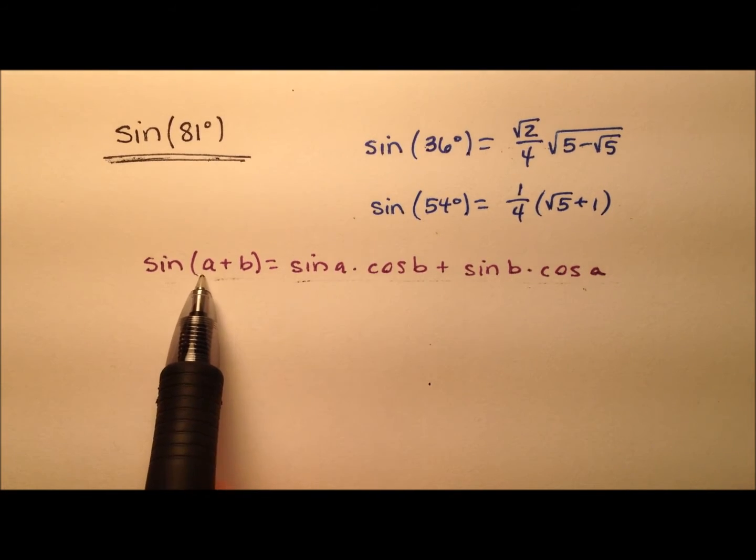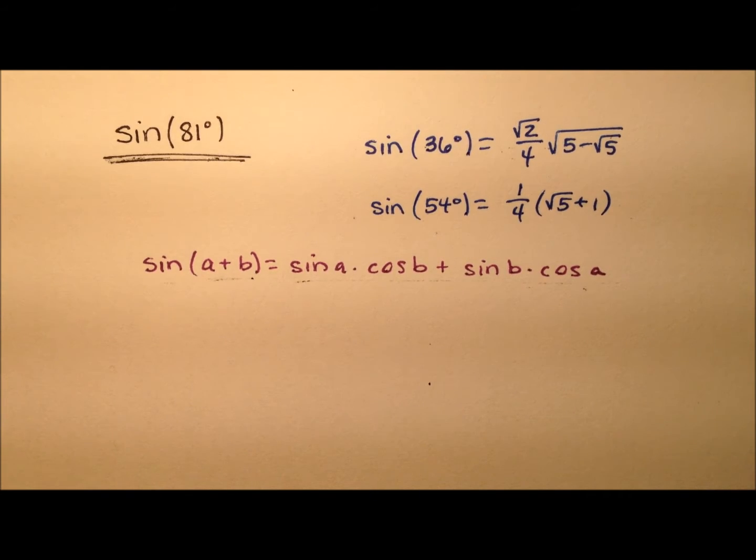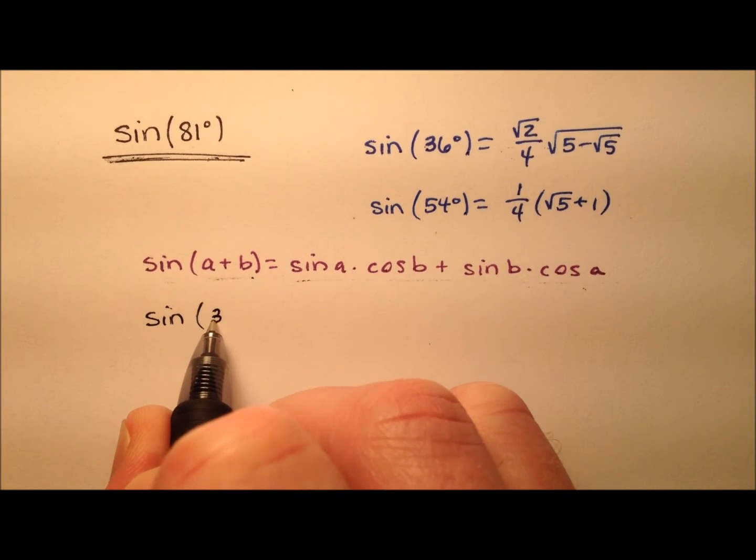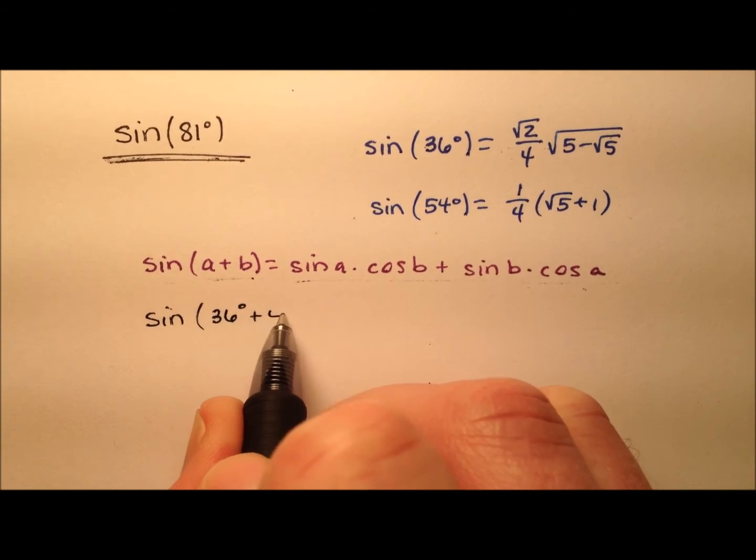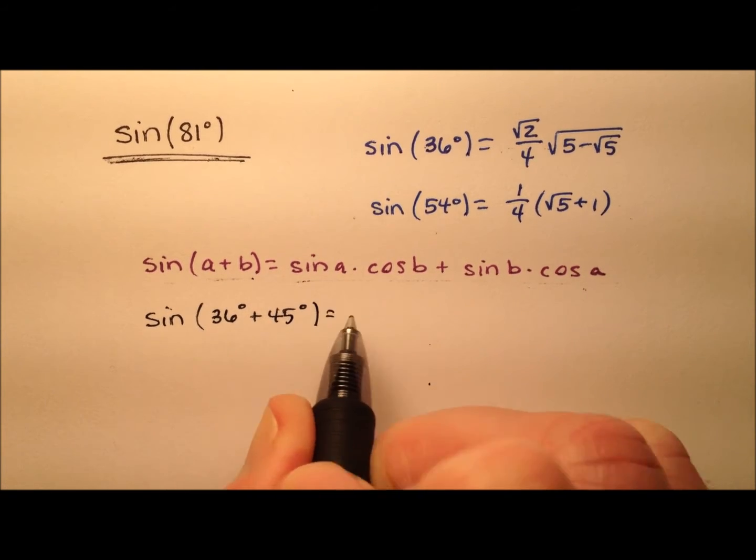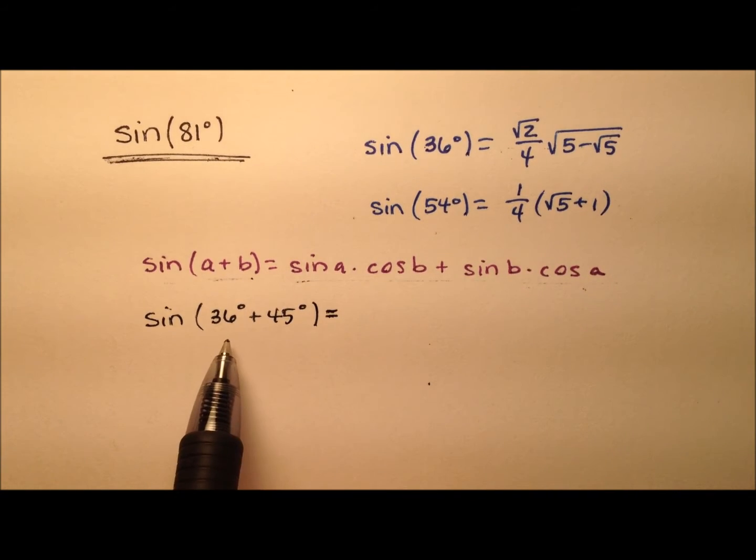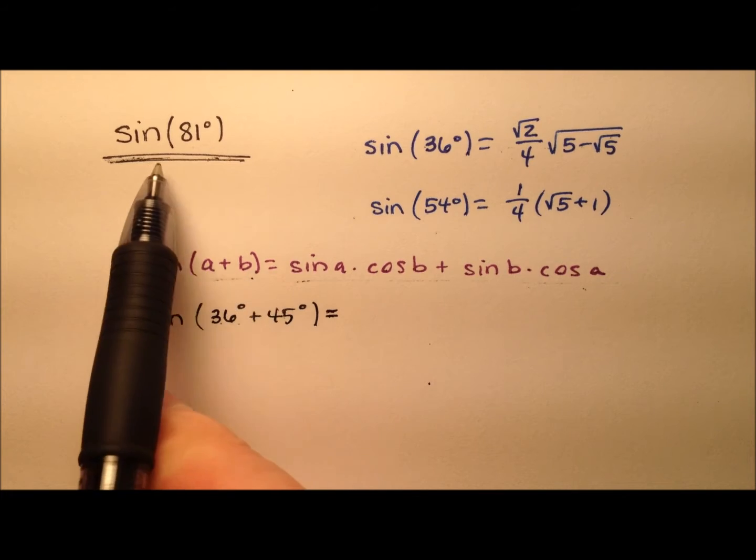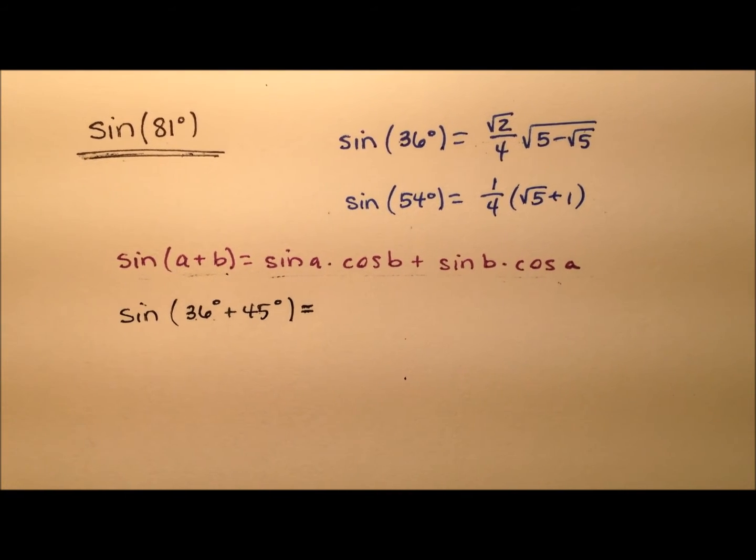So, a and b. We need a couple of angles that are nice to work with that add up to 81 degrees. For our sine, in this case, let's use 36 degrees and 45 degrees. Those are nice values to work with. And 36 plus 45 makes 81 degrees.